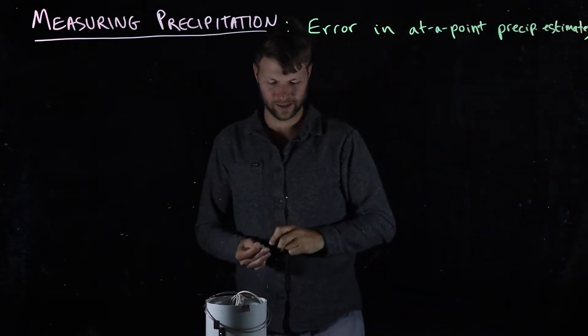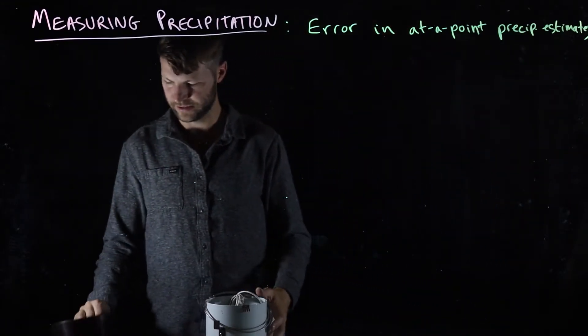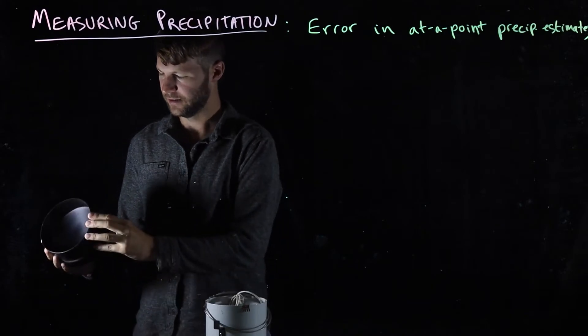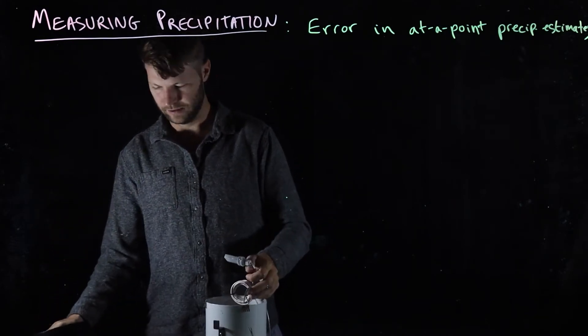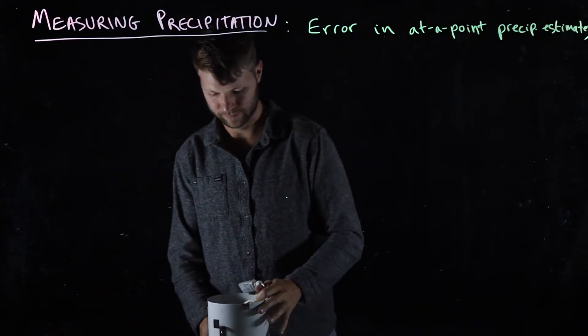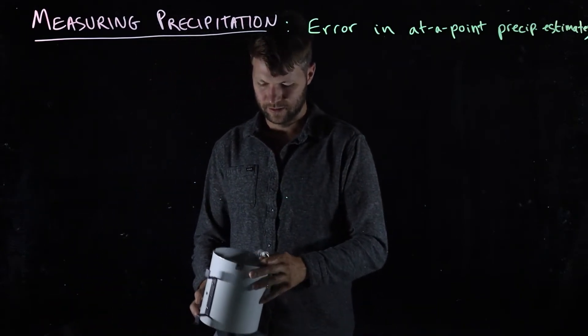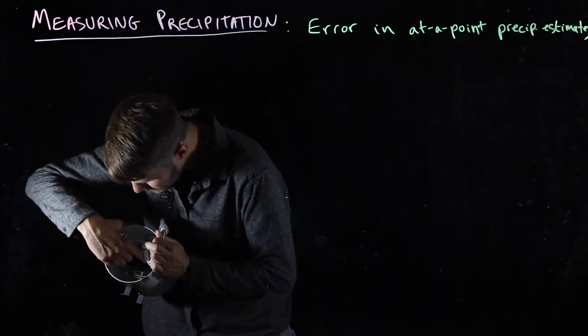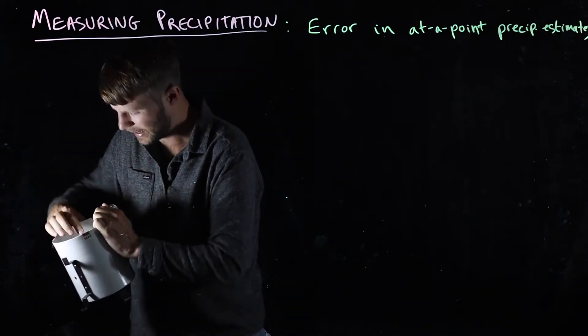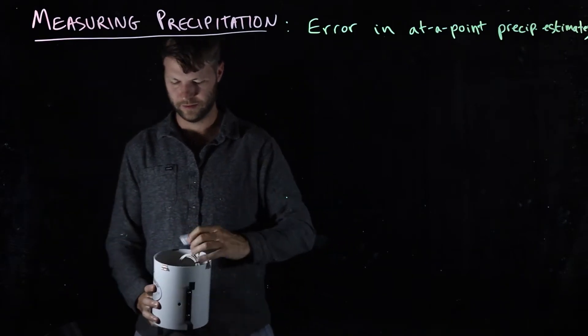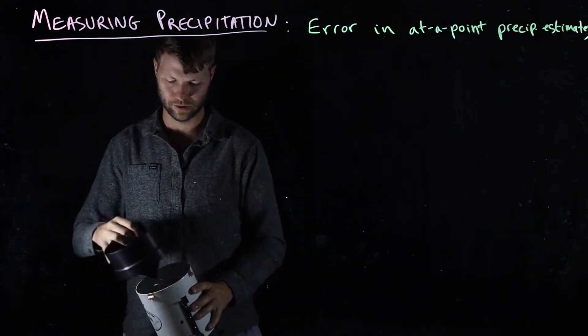Let's consider our standard rain gauge here. This is a standard tipping bucket gauge. This is the funnel that goes on top. This is a little data logger. And inside here is the little tipping bucket that goes back and forth and records rain as it comes in.